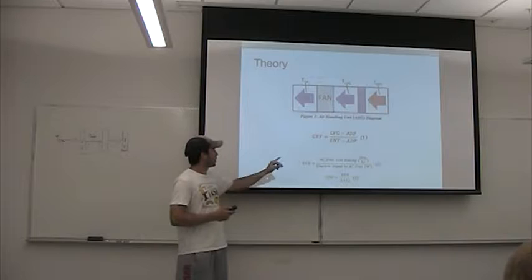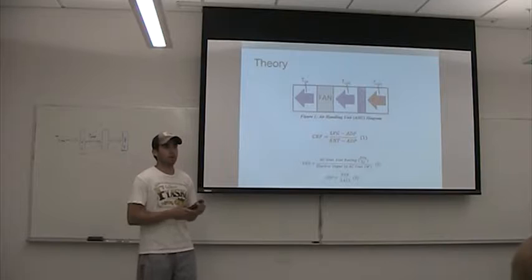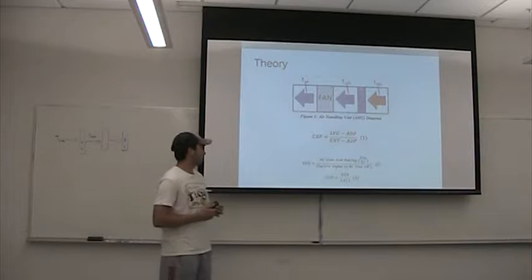So right here, this is the coil bypass factor. It should be between zero and one. The closer it is to zero, the more efficient these coils are at cooling the air. So we're going to have to find that.